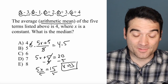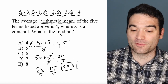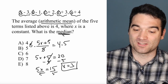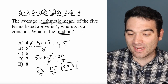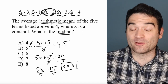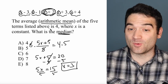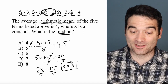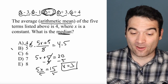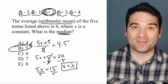Now we're not done, because we aren't solving for x — we're looking for the median of this list. Well, what is the median? It's this term right here, the middle term: x plus 2. We know that x is equal to 3, so let's add 2 to it and get our answer. The correct answer here is B.